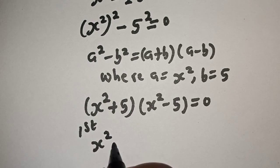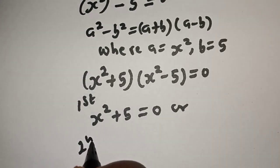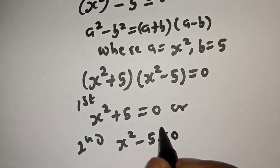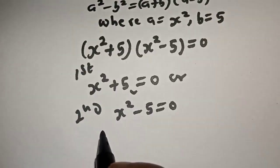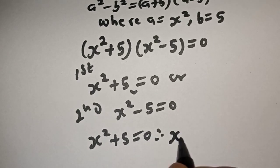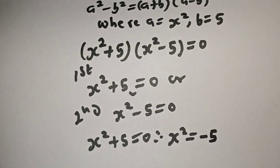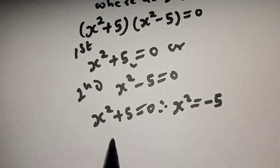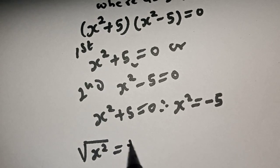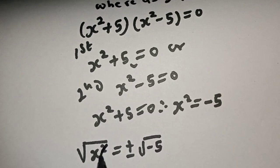The first case is s squared plus 5 is equal to 0. Therefore s squared is equal to minus 5. Now let's take the square root of both sides: the square root of s squared is equal to plus or minus the square root of minus 5.